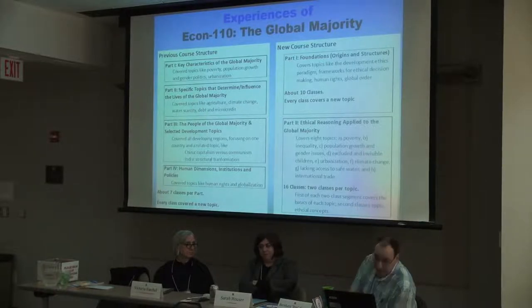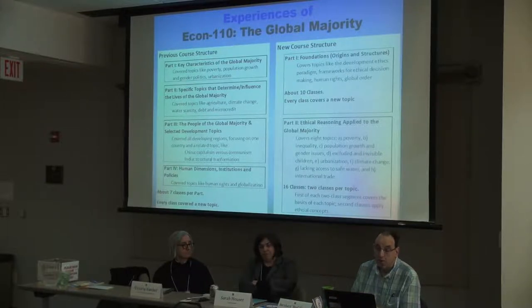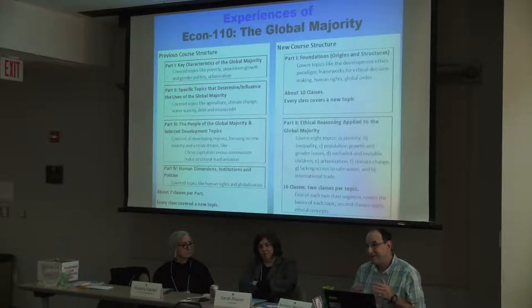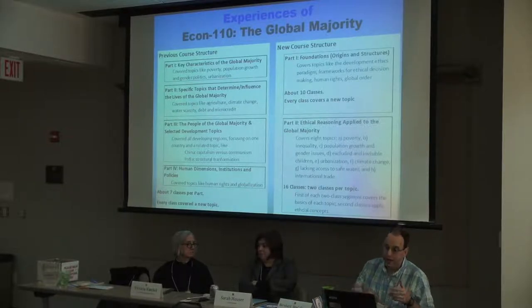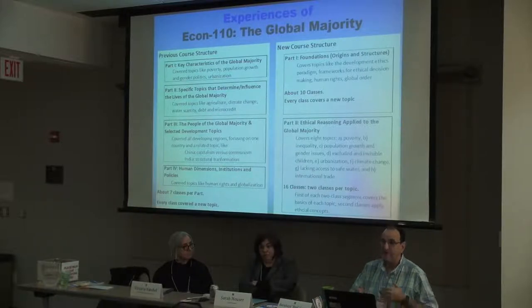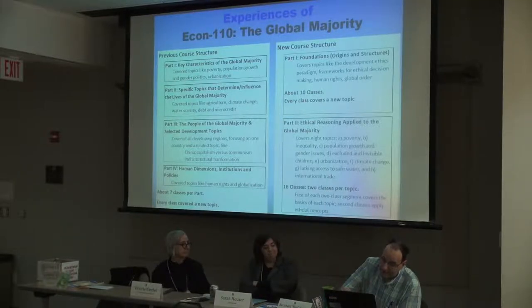I changed it quite fundamentally to now only two parts. In the first part I cover the foundations — origins and structures, covering topics like the development ethics paradigm, ethics frameworks for decision-making, human rights, and global order — about ten classes, one foundation each. In the second part, instead of one topic per class, I now have two classes for every topic. There are eight topics — starting with poverty, inequality, population growth and gender issues — and for each topic, the first class gives students background and the second class covers the ethical aspects. This is how it finally got approved as an ethical reasoning course.